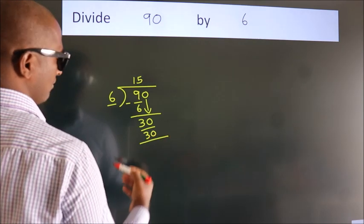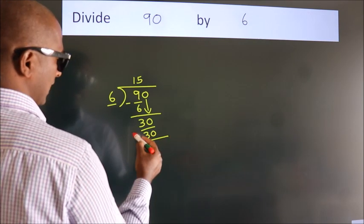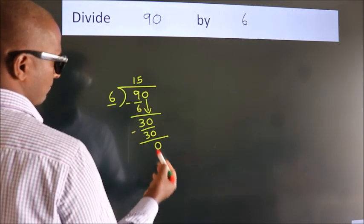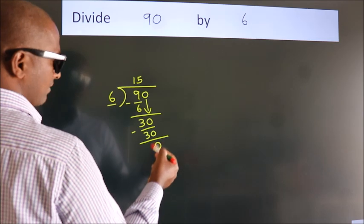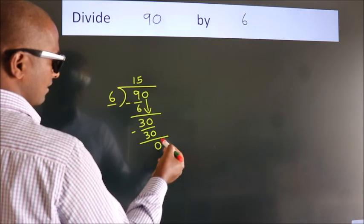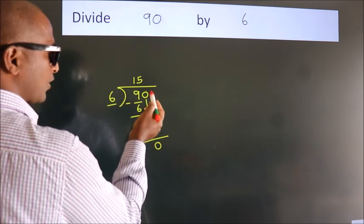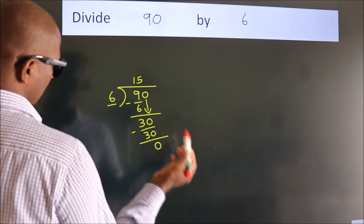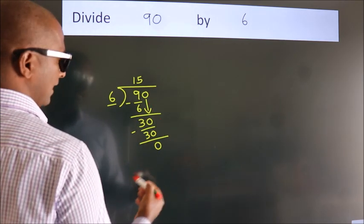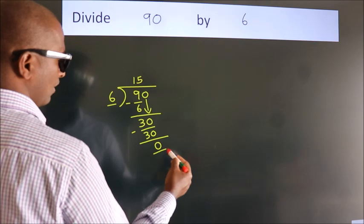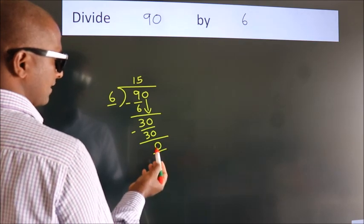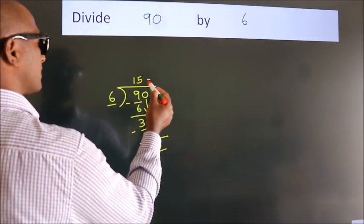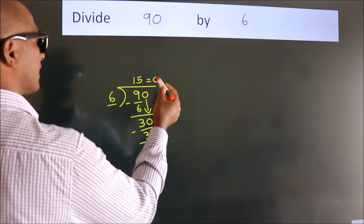Now we subtract. We get 0. After this, no more numbers to bring down, and we got remainder 0. So this is our quotient.